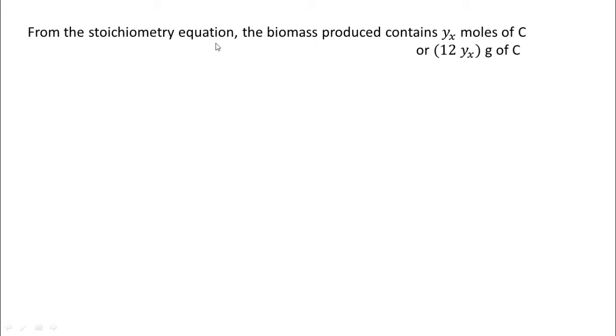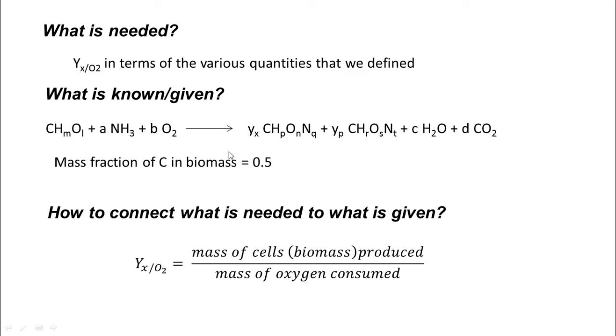From the stoichiometric equation, the biomass produced contains Y_x moles of C or 12Y_x grams of C. Let us see this stoichiometric equation again. This is our biomass here. Y_x is the stoichiometric coefficient and C has a subscript of 1. This has been probably normalized for a mole of C and Y_x moles are formed. Therefore, this particular stoichiometry gives Y_x moles of C.